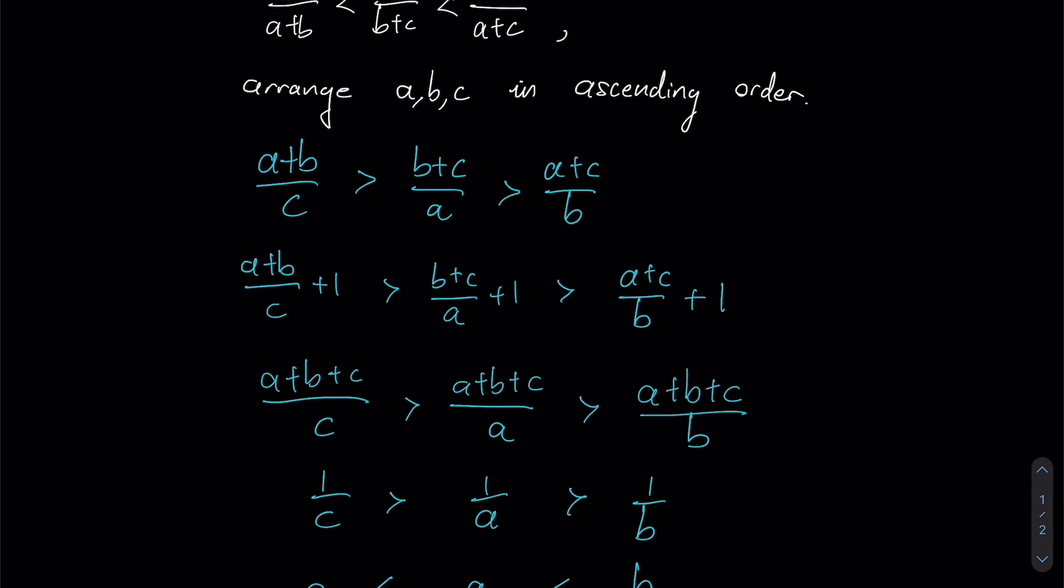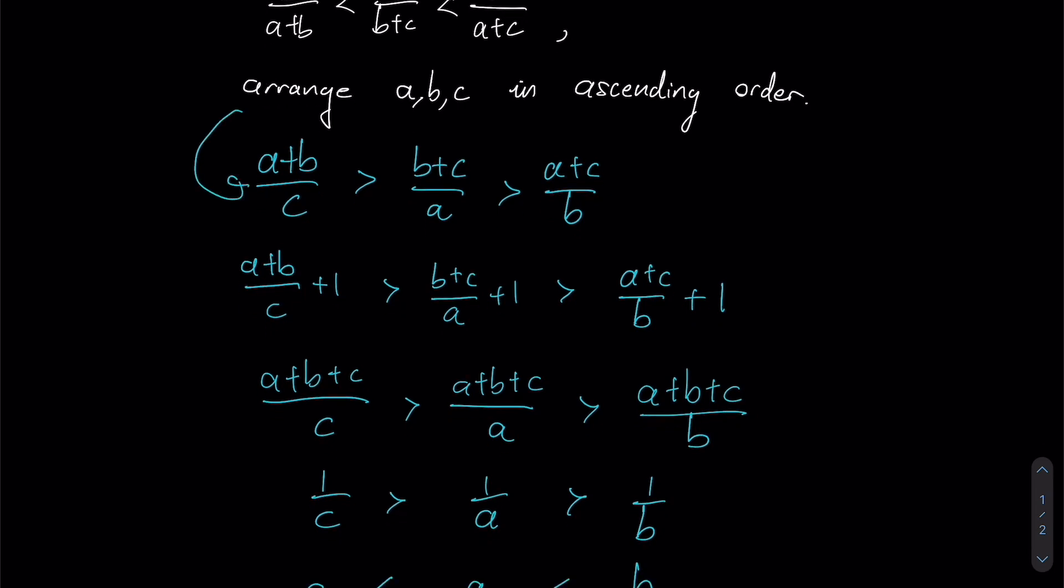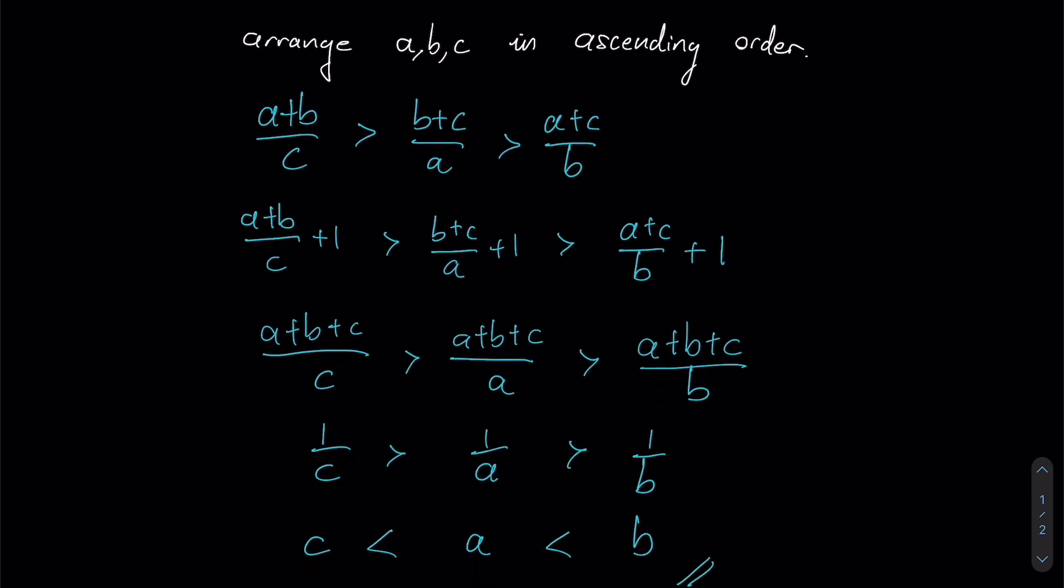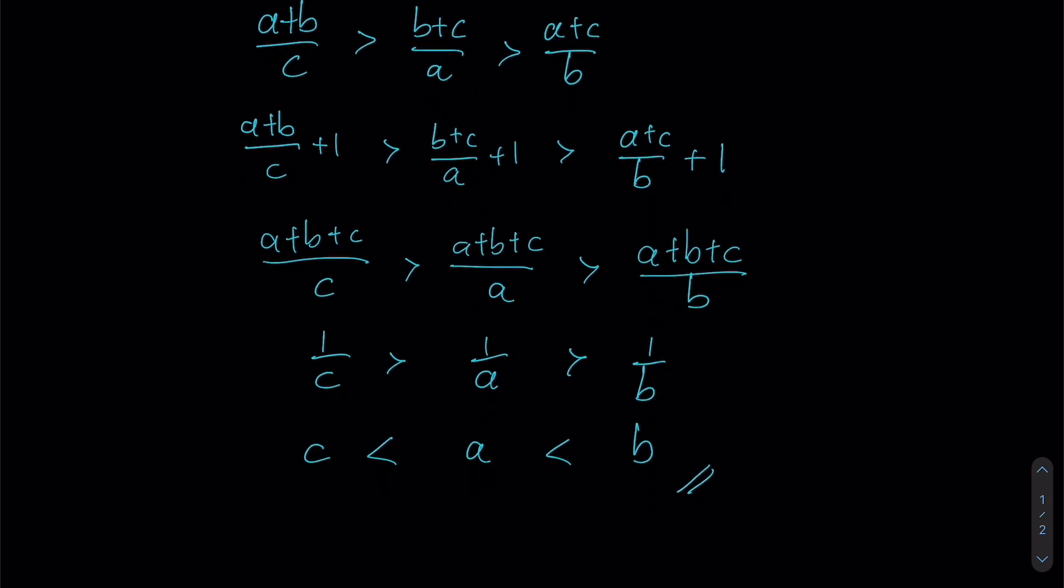So just to do a quick recap, we took the reciprocal of the fractions twice: once at the start, and then we added one whole to each of the fractions here such that we will be able to obtain the same numerator for all three fractions. Divide by that sum and you'll end up with 1 over c, 1 over a, 1 over b. From then on take the reciprocal again and then we will achieve our answer over here.